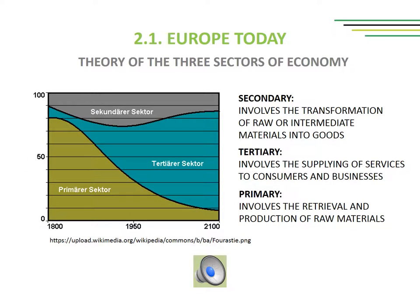The primary sector involves the retrieval and production of raw materials such as corn, coal, wood, and iron. A coal miner and a fisherman would be workers in the primary sector.